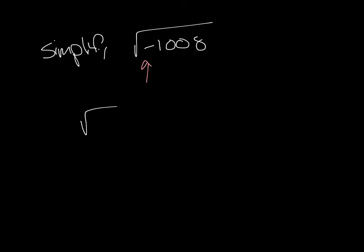So I'm going to rewrite that as negative 1 times 1,008. I'm going to deal with this negative 1 under the square root. That's just going to give me an i factor.